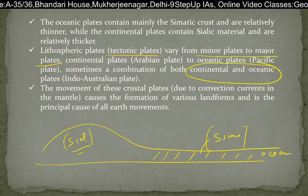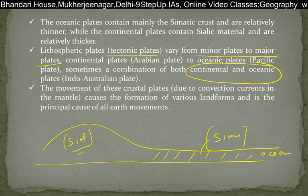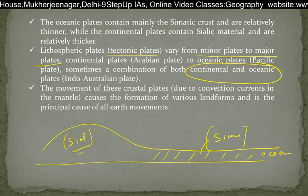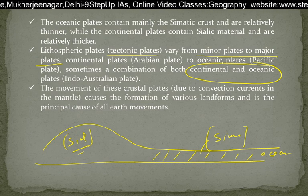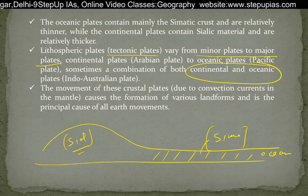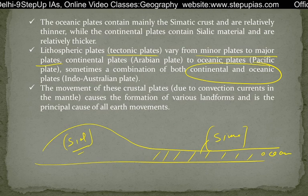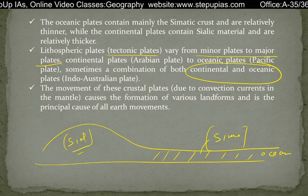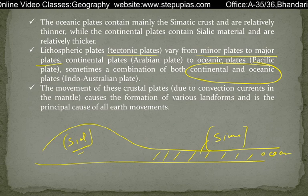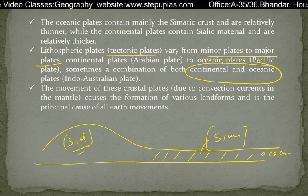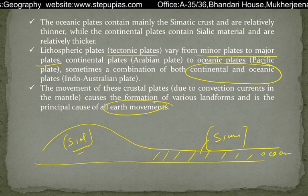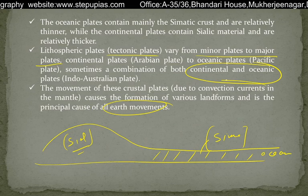So three types of plates are discussed here: minor plates, major plates, and continental and oceanic plates. The movement of these mantle convection currents causes the formation of various landforms and is the principal cause of all Earth movement.